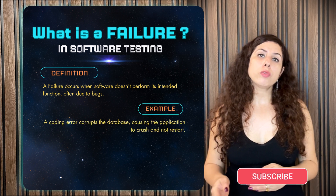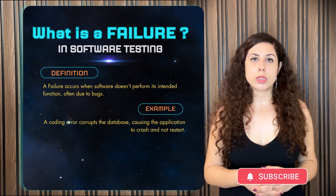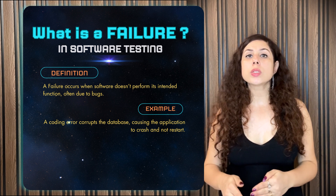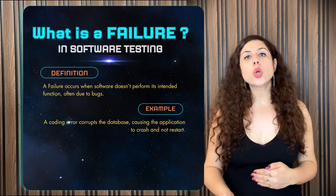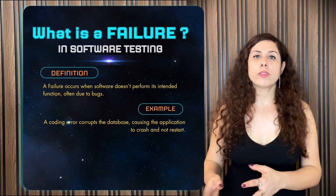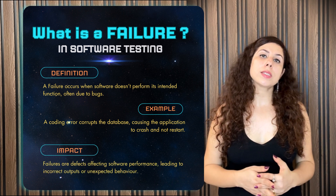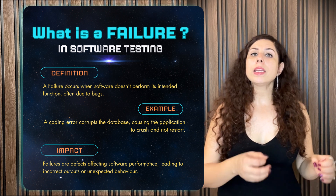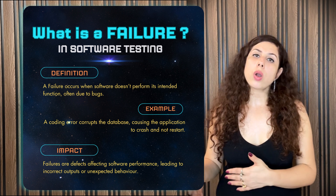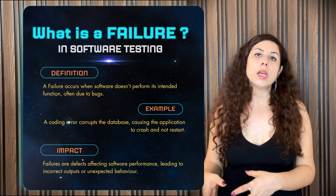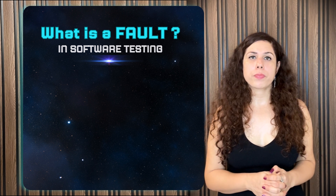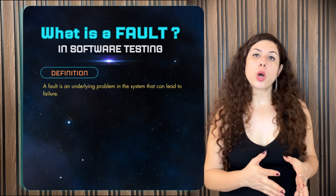For example, there was a bug in a part of code that updates the phone number of a user. When this buggy code gets executed, it corrupts the complete user table in the database. As a result, no user is able to login to the e-commerce website, causing a system failure. Basically, the failure of a system is the manifestation of a defect that affects the software's performance, causing the system to produce wrong outputs or behave unexpectedly from the user's perspective.